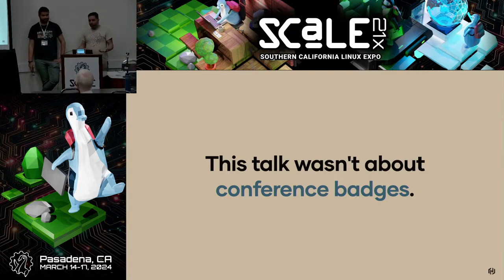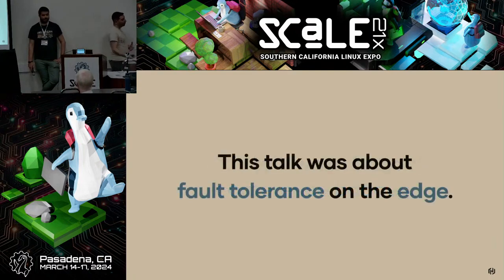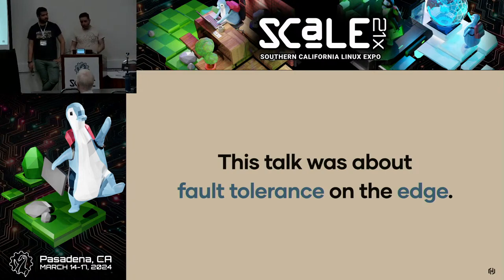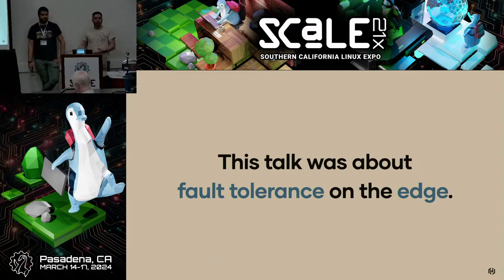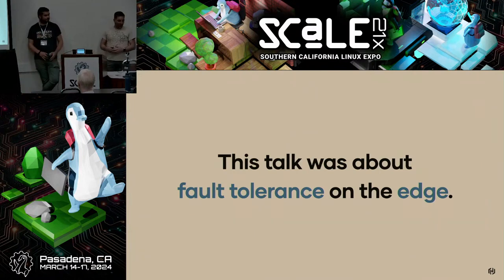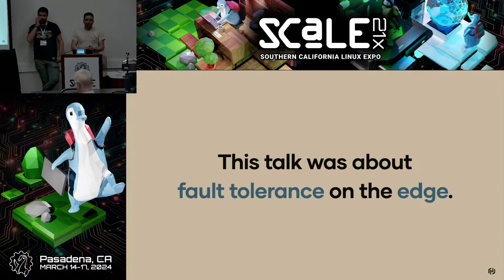So conference badges, badge orchestration, job orchestration at the edge, workloads — it's not about conference badges. It never was. It's very much about fault tolerance at the edge, figuring out what patterns work, what patterns don't, and how you can apply this to the rest of your engineering. The beauty of embedded projects is that you're crossing those boundaries — figuring out formulas you probably learned in elementary school and forgot about, like how to calculate how long your battery is going to last. Your iPhone's stopwatch is not the correct way. We may have tried that.